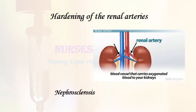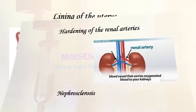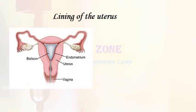Hardening of the renal arteries: nephrosclerosis. Lining of the uterus: endometrium.